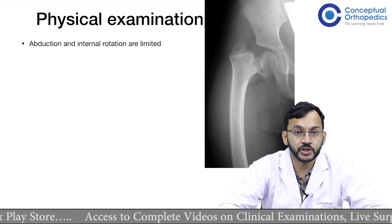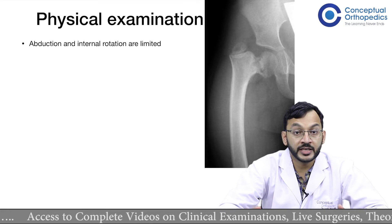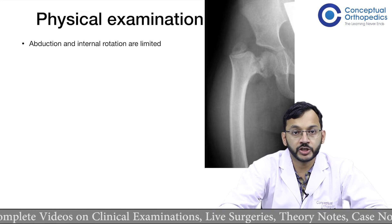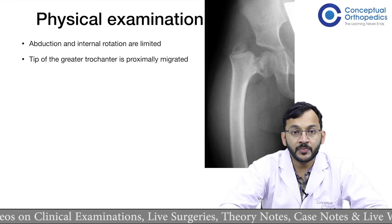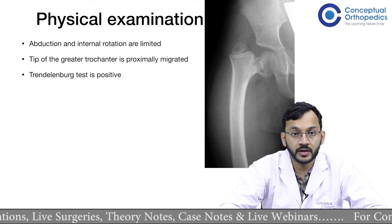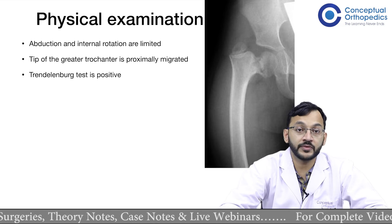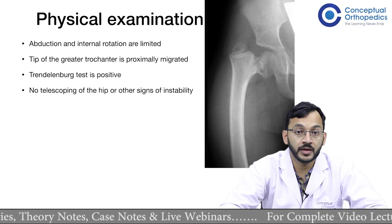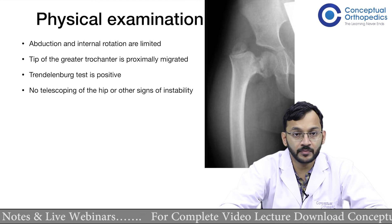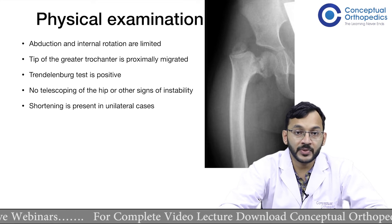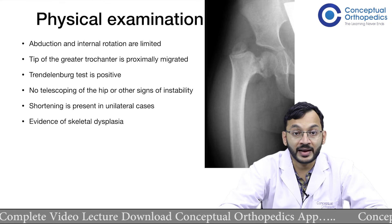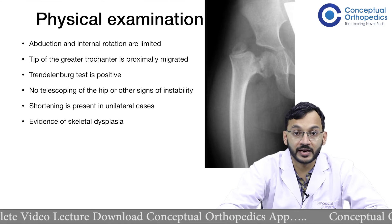On physical examination, there is restriction of abduction and internal rotation. The tip of the greater trochanter is proximally migrated. The Trendelenburg test is positive. There is no telescopy of the hip or other signs of instability. Shortening is present in unilateral cases, and there may be evidence of skeletal dysplasia.